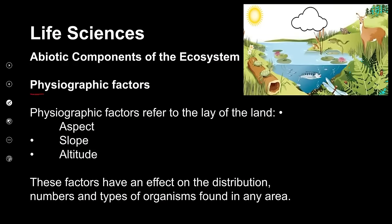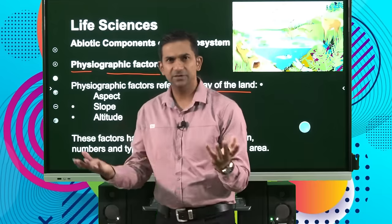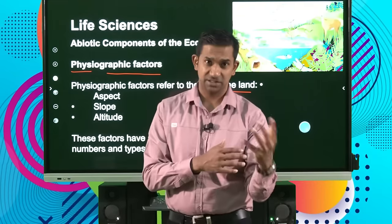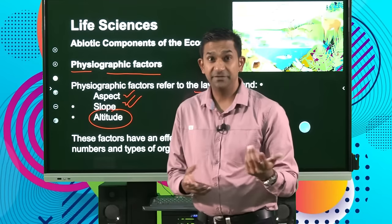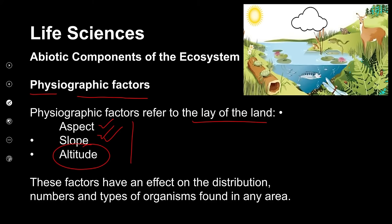And finally, we have the physiographic factors. The physiographic factors refer to the lay of the land — the type of land and its geographic situation. This is in the context of the aspect, which is the amount of light that the area receives. The slope in terms of the terrain — you find that it's mountainous, with slopes facing the sun or away from it. We also refer to the altitude, which is the height of an area above sea level. Collectively, all of these physiographic factors can influence the complexity of life in an ecosystem — they have an effect on the distribution of the numbers and types of organisms found in an area.